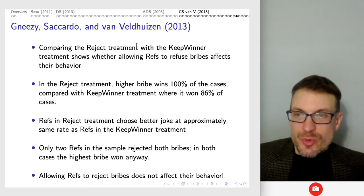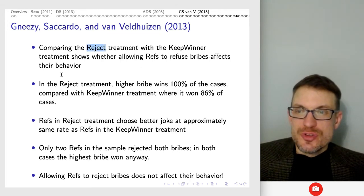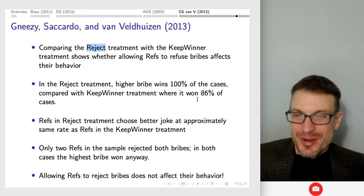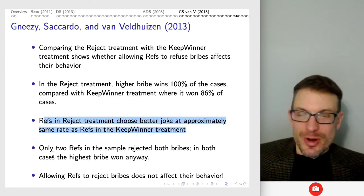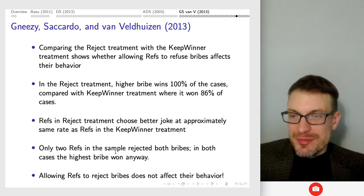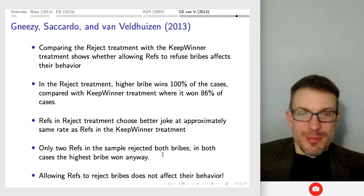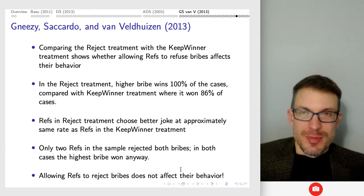Refs seem happy to reward the worker who sends more money when the reward does not require them to distort their judgment — as in no task — but not when it does require distorted judgment. In this subject pool, the moral cost of distorting judgment appears stronger than the norm of reciprocity. Comparing the reject treatment to keep winner shows that allowing refs to refuse bribes didn't really affect their behavior — in reject, the higher bribe won 100 percent of the time, and only two refs rejected both bribes.